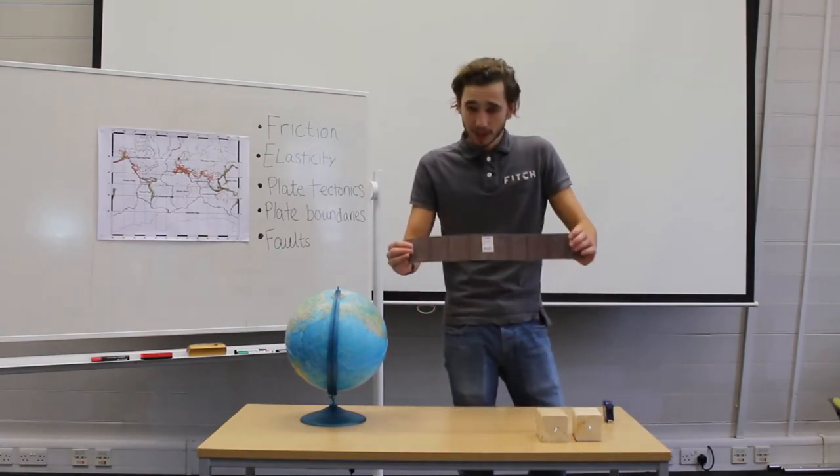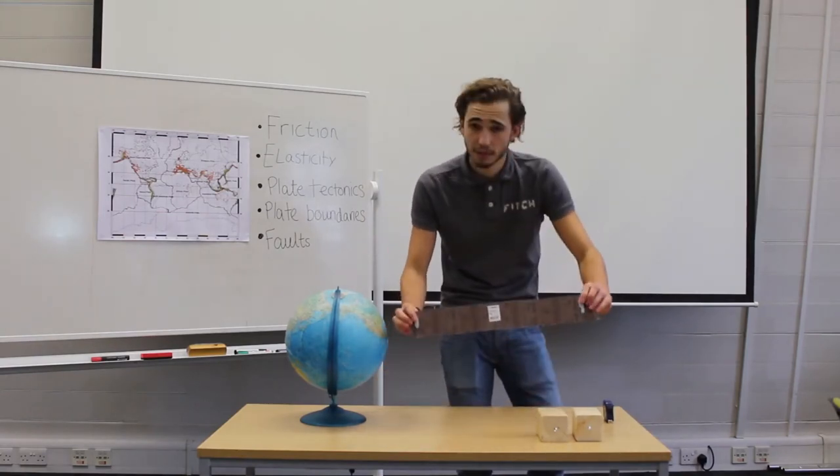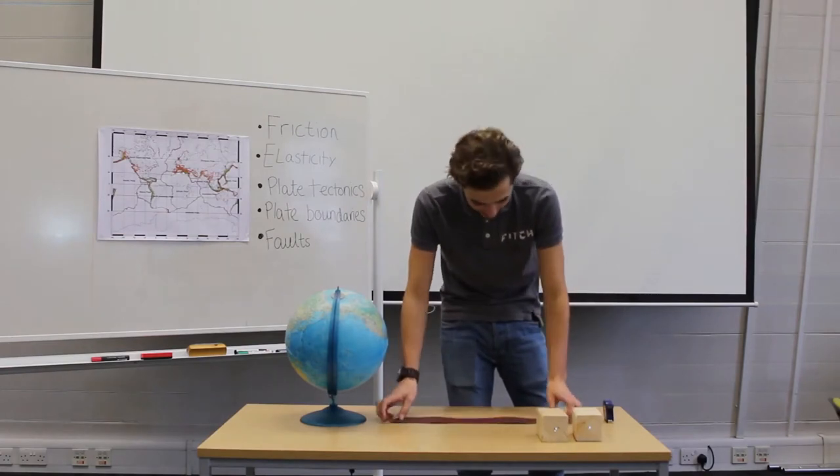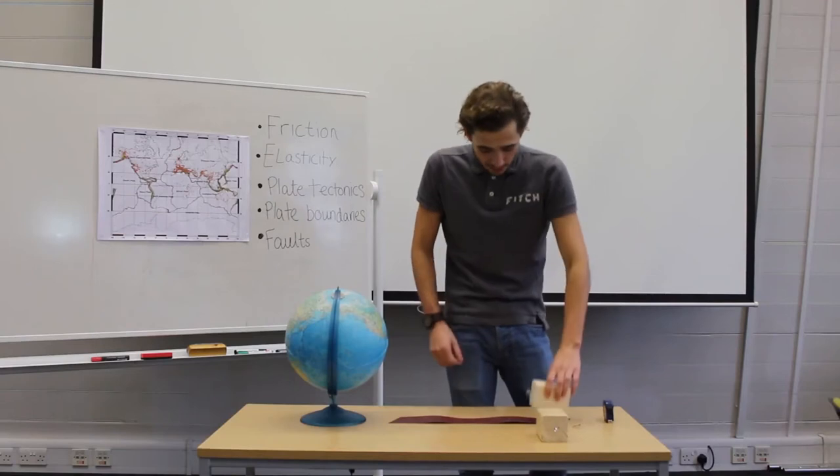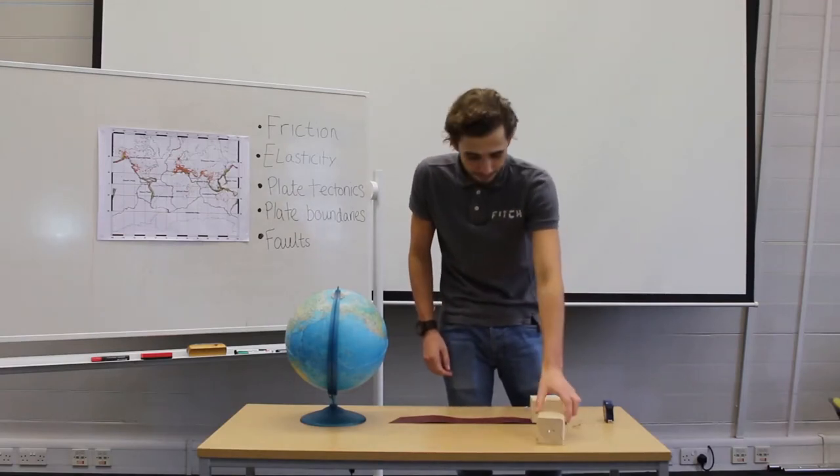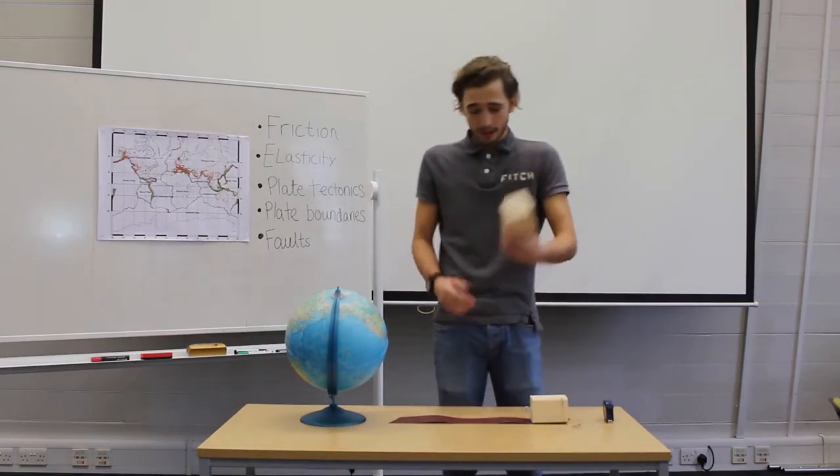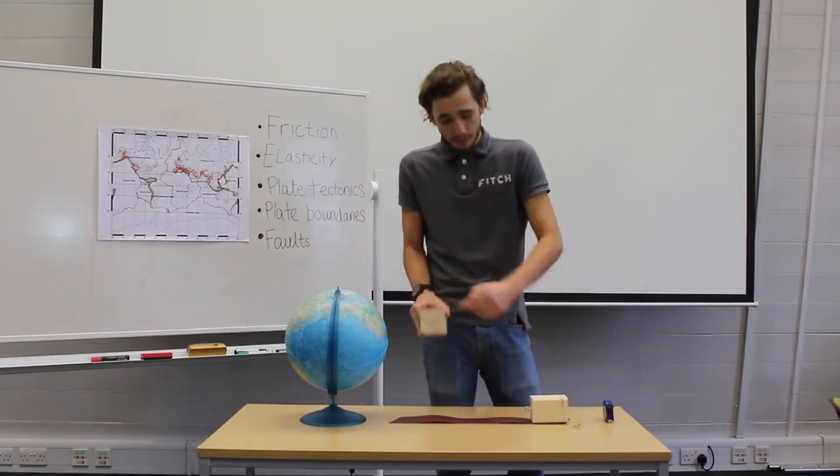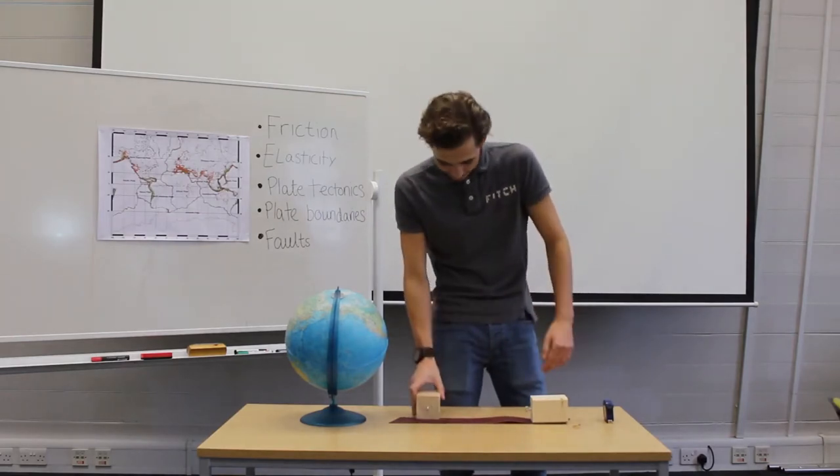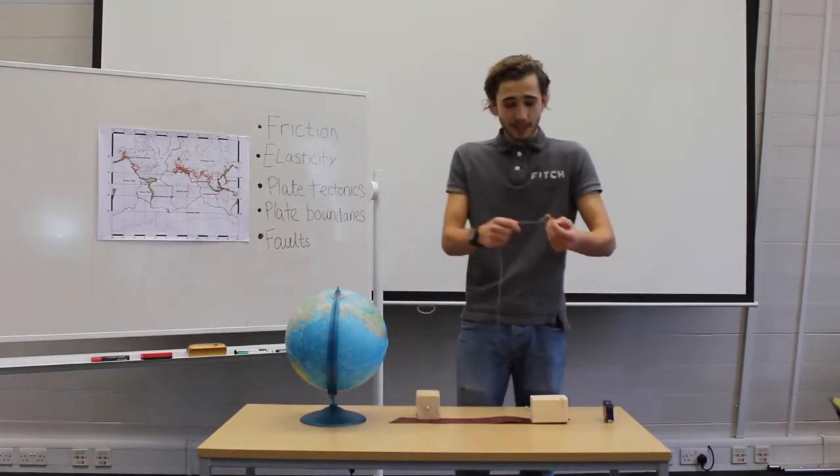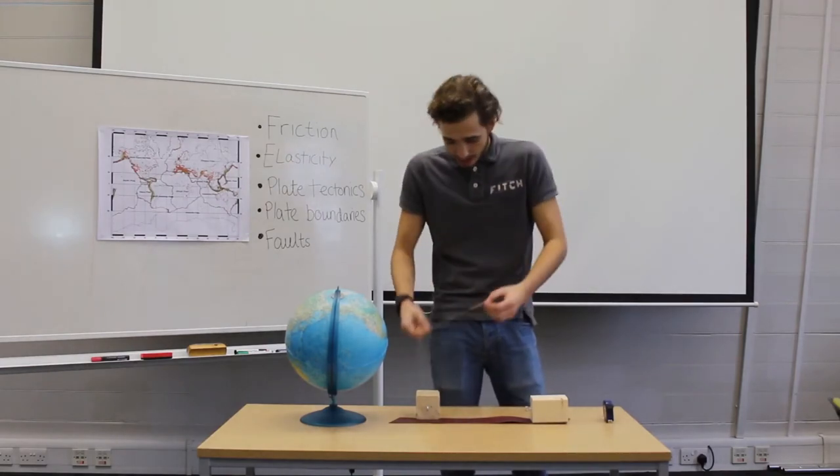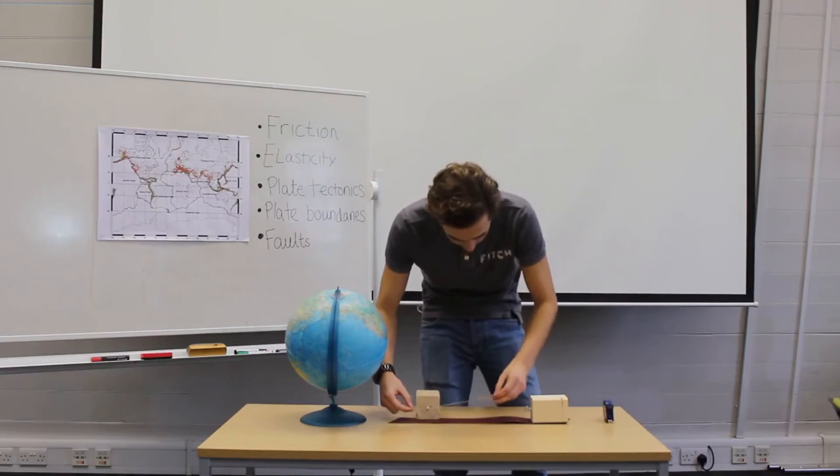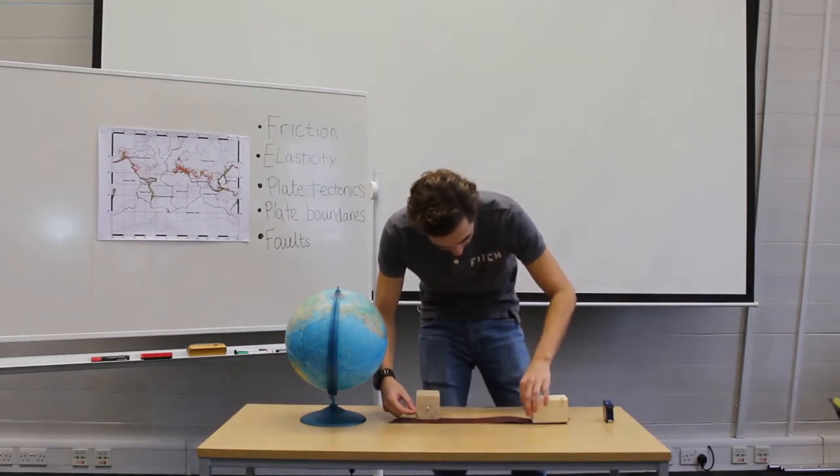Now to set the model up, we'll secure the sanding belt to the table using some blue tack or sticky tape. Then take the block with the sandpaper attached at the bottom, and mount it at one end of the sanding belt. Next, take the other block, and mount it so that the eye screw is perpendicular to the sanding belt. Take the piece of string, and make sure that it's tied to the rubber band like so, and then thread it through the first eye screw, and attach it to the end of the other one there.